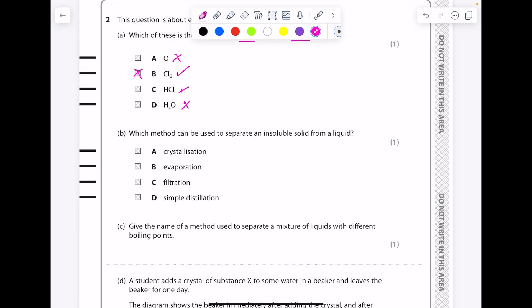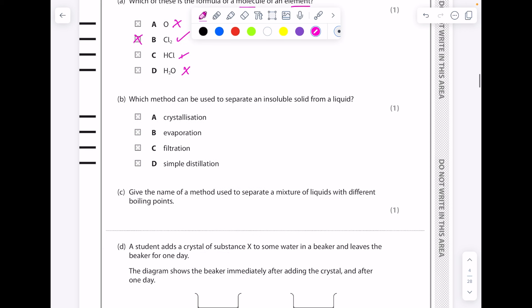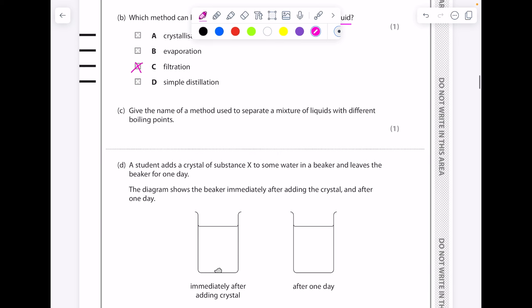Which method can be used to separate an insoluble solid from a liquid? So something which doesn't dissolve from a liquid, that's simply filtration. Give the name of a method used to separate a mixture of liquids with different boiling points. The key thing here is a mixture of different boiling points, so that's why it's fractional distillation as opposed to simple distillation.